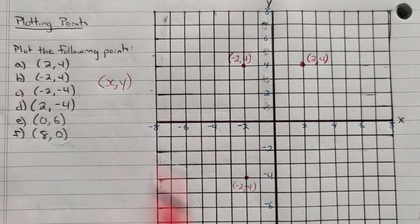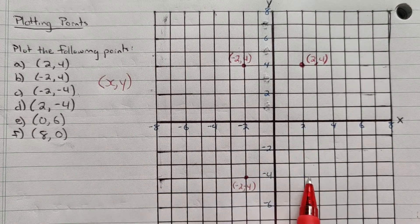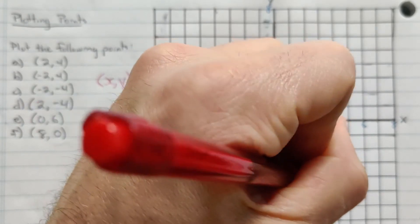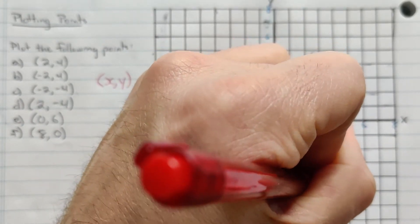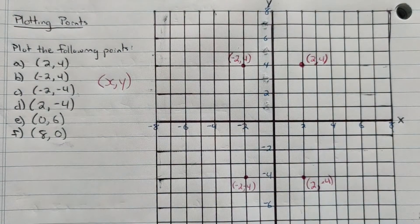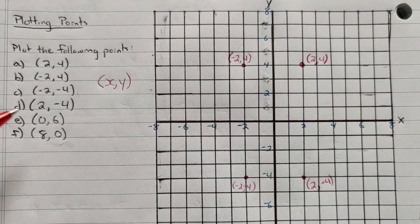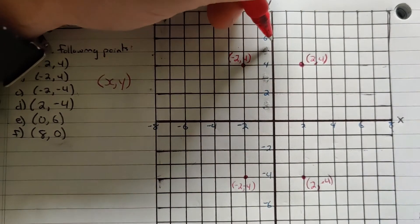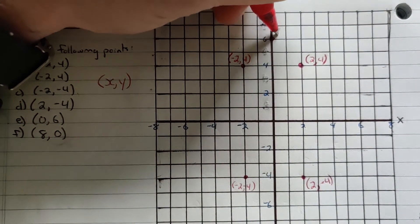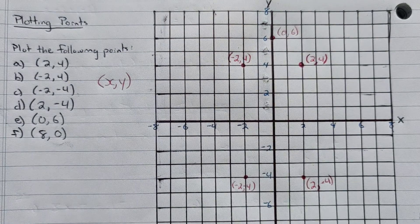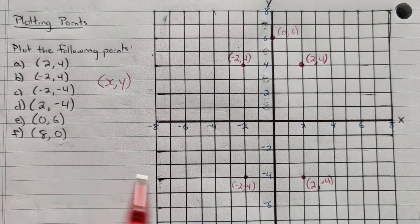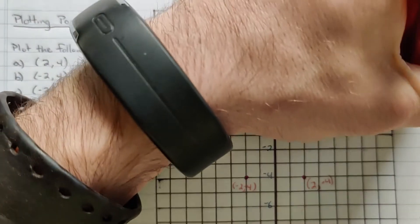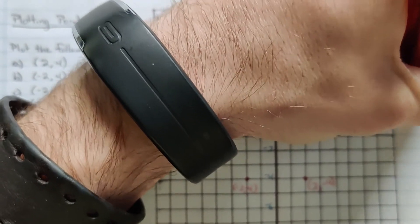The next one is two and negative four. So I go along the x axis to two, down to negative four. That point's down here. Two, negative four. And then I got two more here. I got zero, six. So zero means I don't move anywhere along the x axis. I just go right up to six. Zero, six is right here. And then I got eight, zero. So that actually means I'm going to move along the x axis to eight and not go up or down on the y axis. So right here is my point, eight, zero.